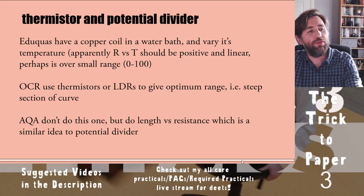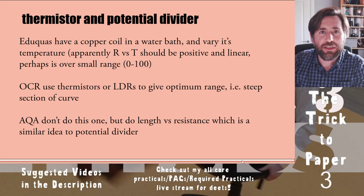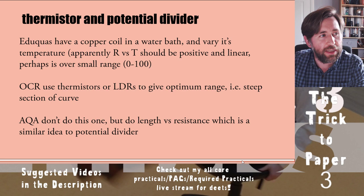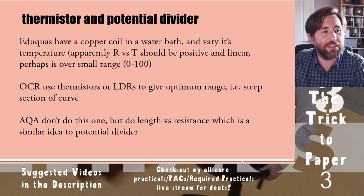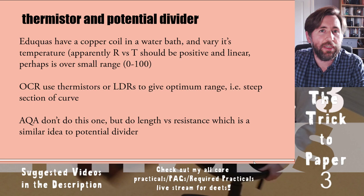OCR calls them PAGs and AQA calls them required practicals. Edexcel actually does the thermistor practical using a copper coil in a water bath, where the change in resistance with temperature is positive and linear — or at least appears linear over a very short range. OCR uses thermistors or LDRs and requires you to work out the optimum range where the graph is steepest, making it most useful as a temperature or light sensor. AQA does a length-versus-resistance practical using a potential divider to get resistivity.